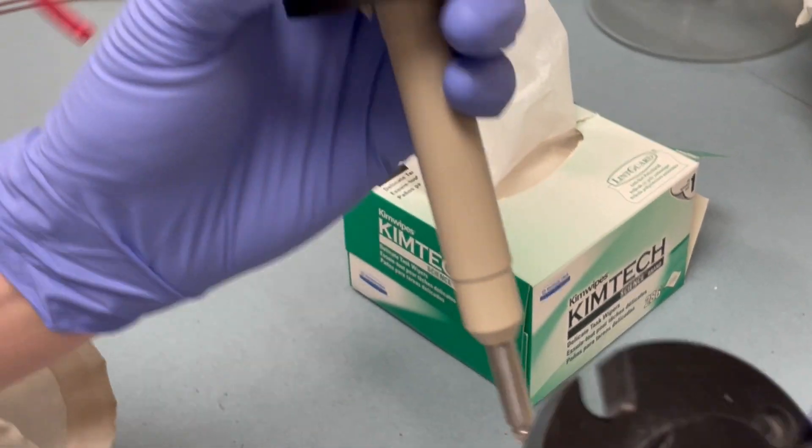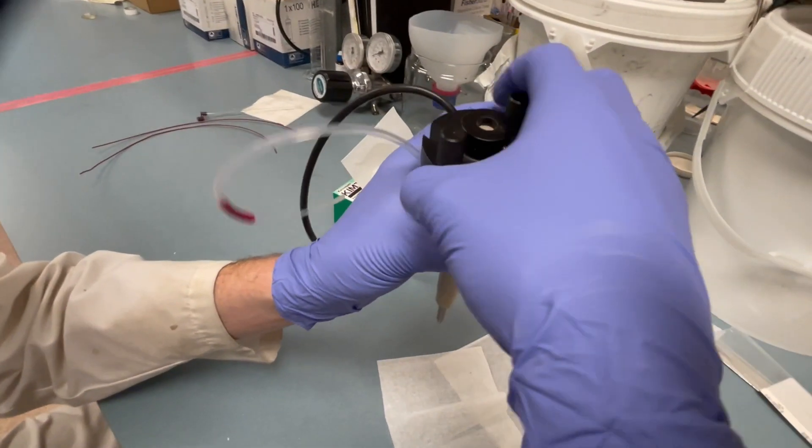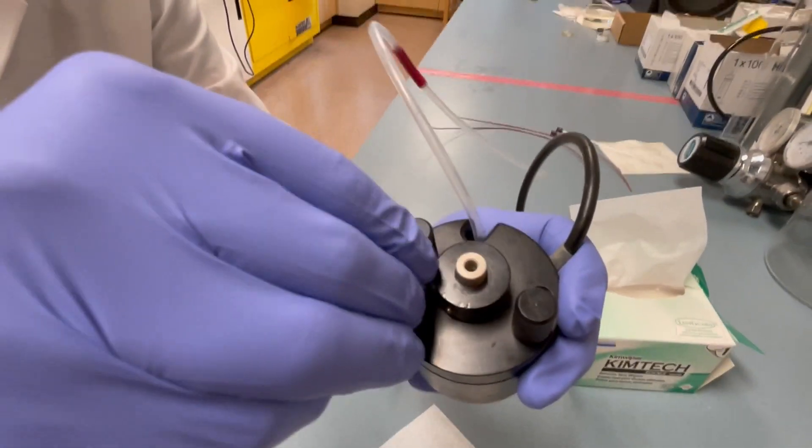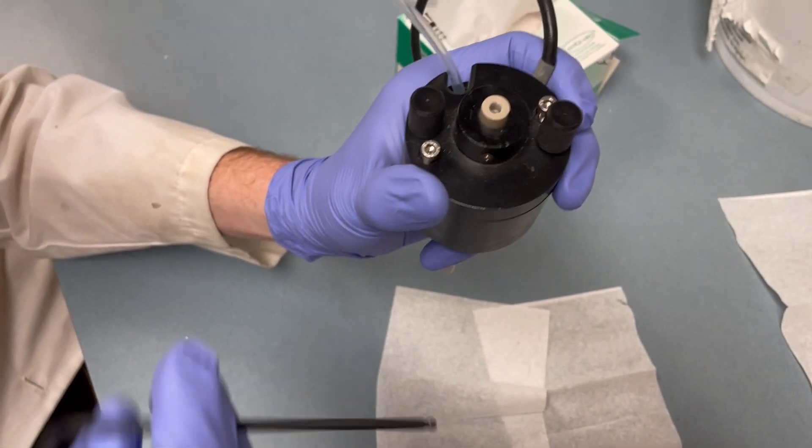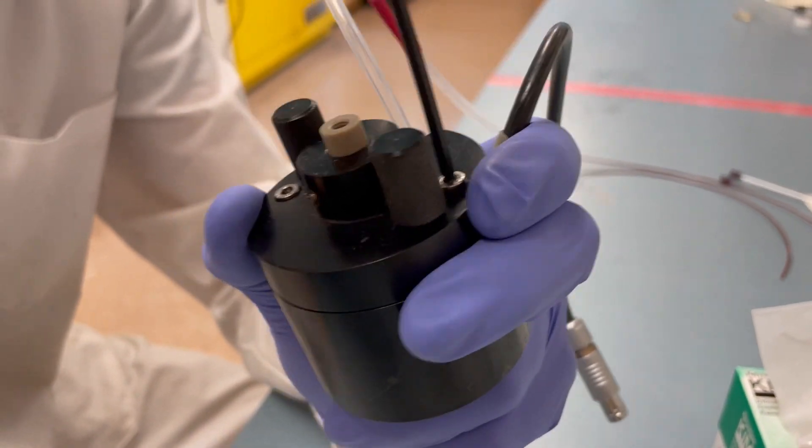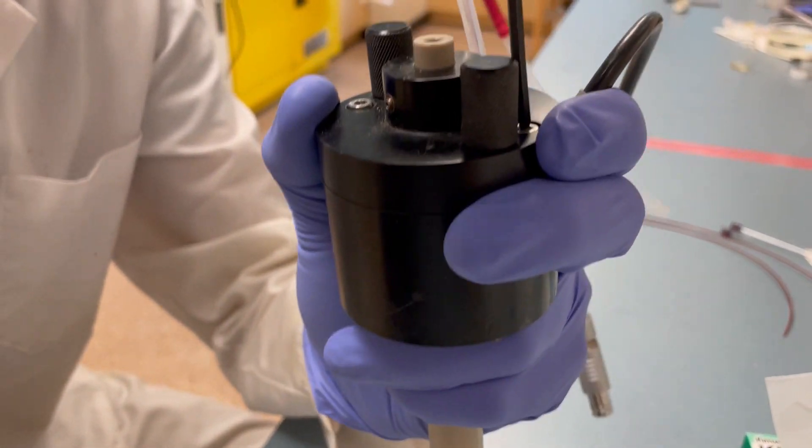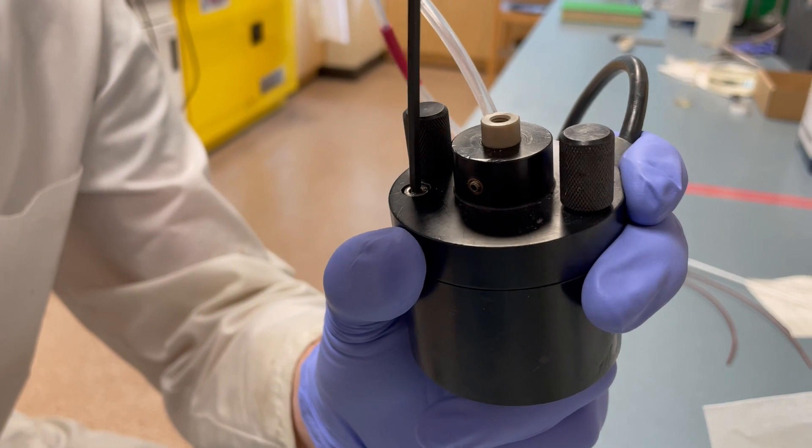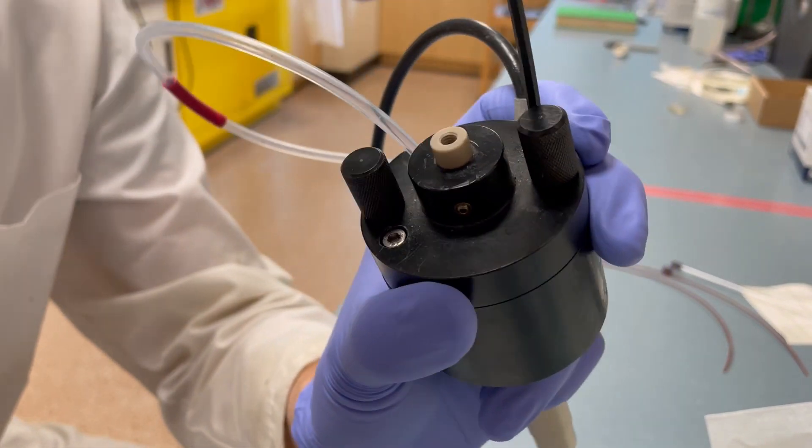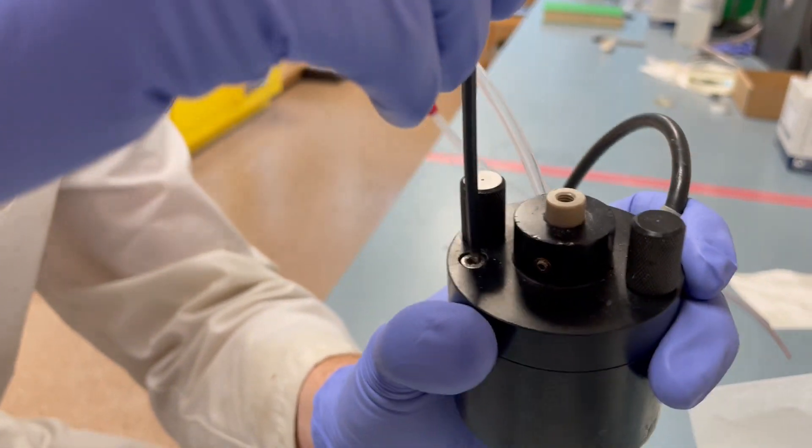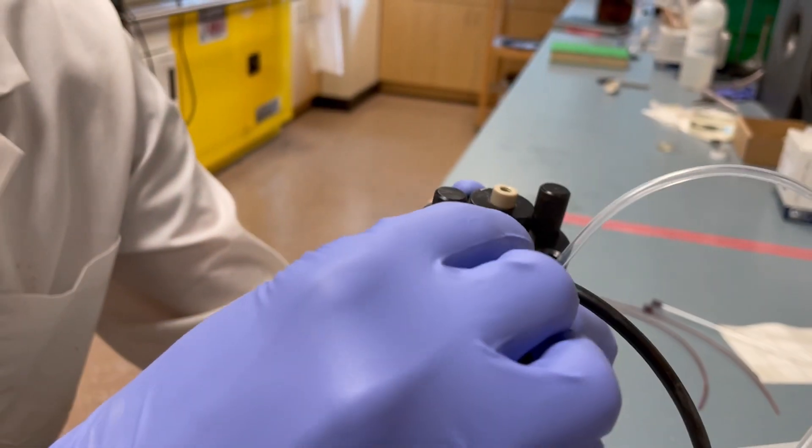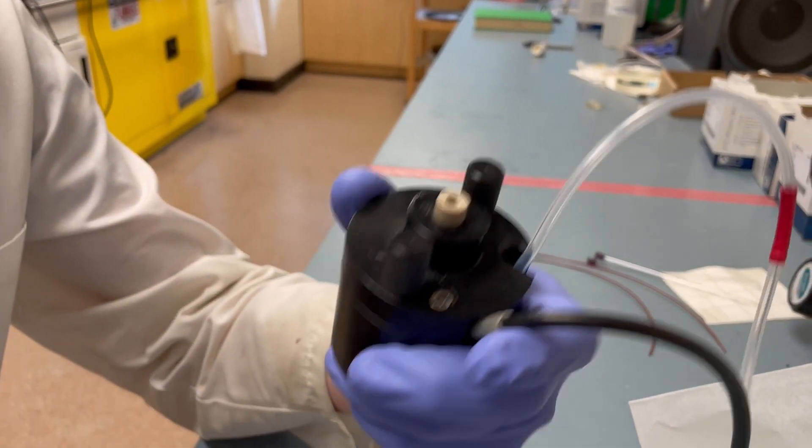Then I'm going to reassemble the top and put our screws back in. When you're getting close to almost tight, it's good to alternate back and forth a little bit so that it goes down evenly. These should be reasonably tight but not too tight. We don't want to strip the threads of the plastic on the inside.